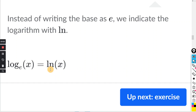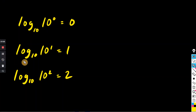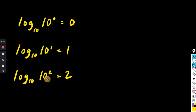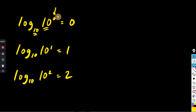You should see ln on your calculator. If you recall, we did this exercise with log base 10. Log base 10 of 10 to the 0 is just 0. Log base 10 of 10 to the 1st is just 1, and so on. So if the base of the log matches the base number of the argument, then the answer is just the exponent.